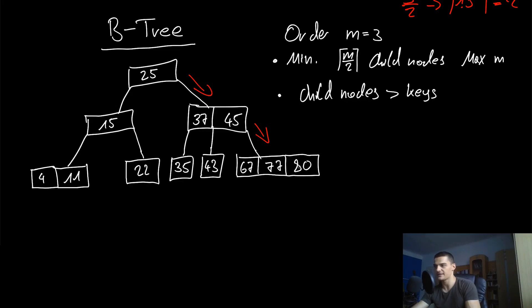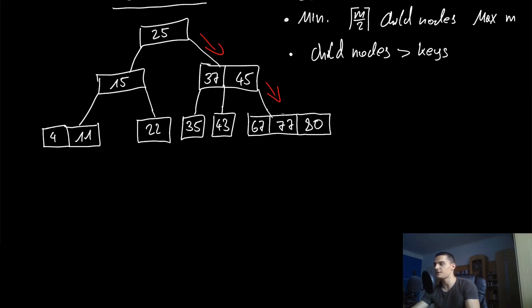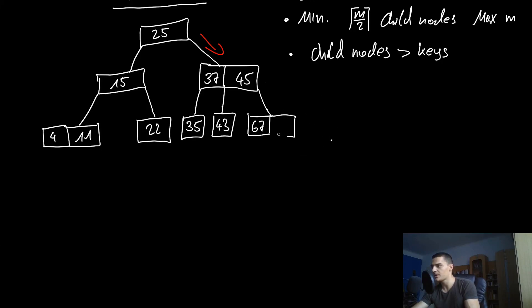Now the problem is that we have a block with three keys — 67, 77, and 80 — which is not allowed, because with order 3 the maximum number of keys is two. So we need to adjust. What we do is shift the center value, 77, up one level. We remove 77 from the leaf level and push it up into the level above.